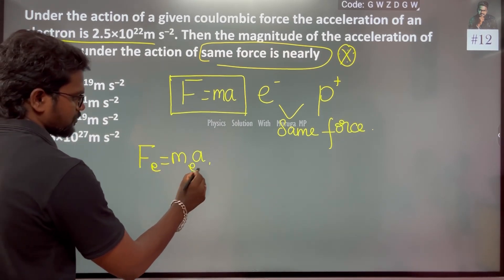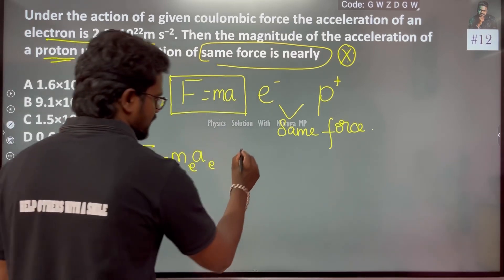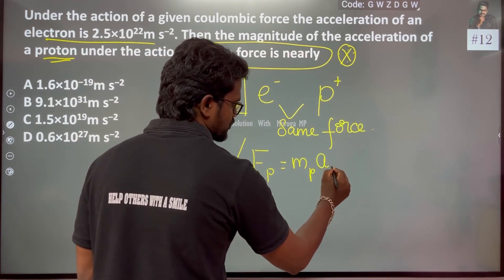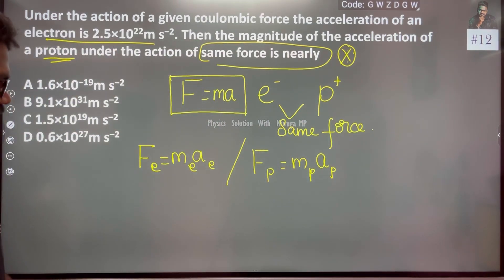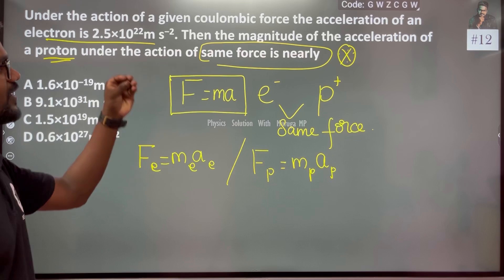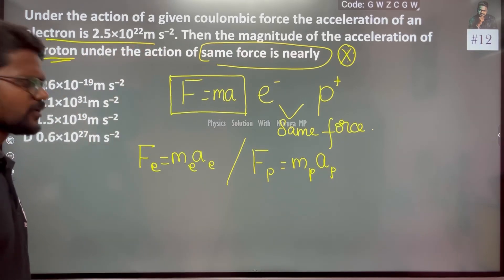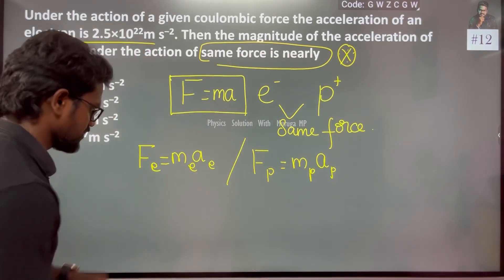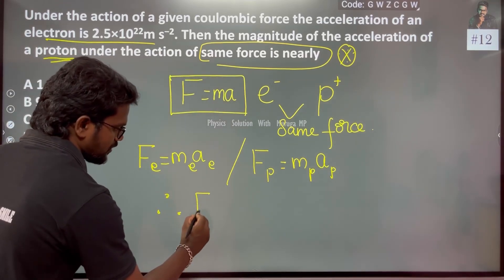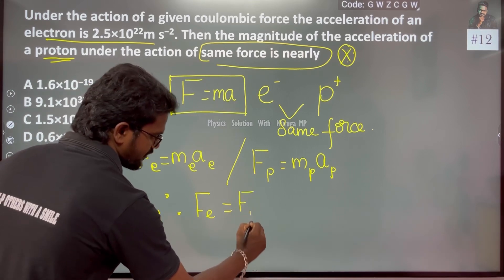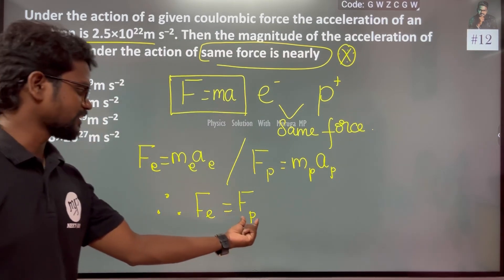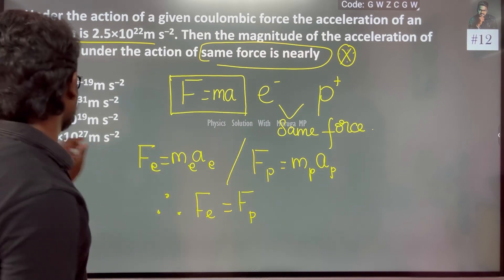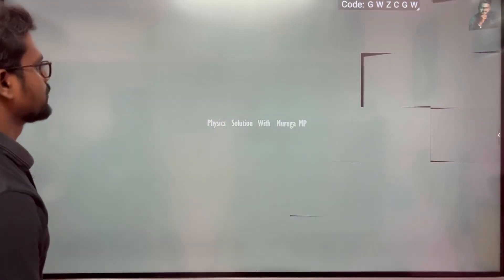For the electron: F_e = m_e × a_e. For the proton: F_p = m_p × a_p. Since the force is the same, F_e = F_p, so we can write m_e × a_e = m_p × a_p.